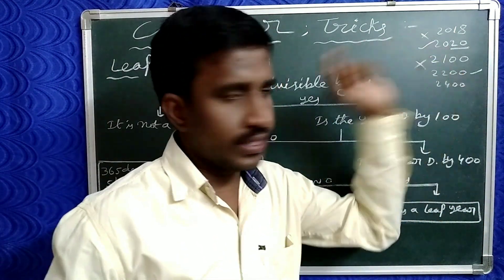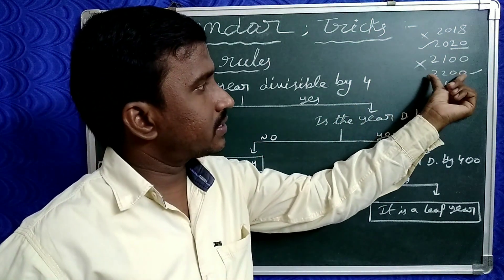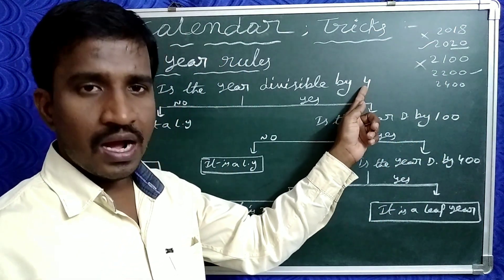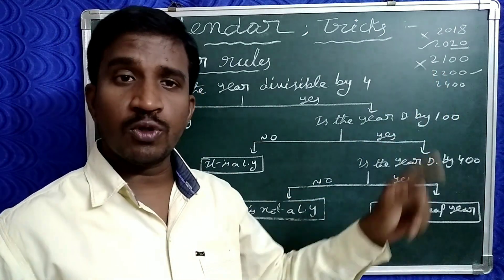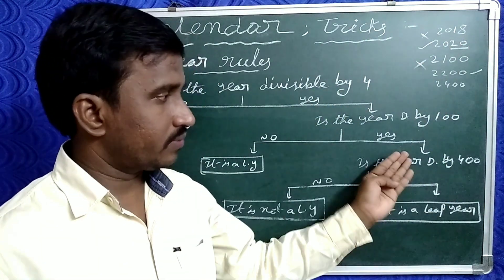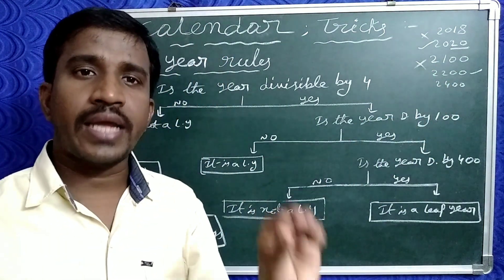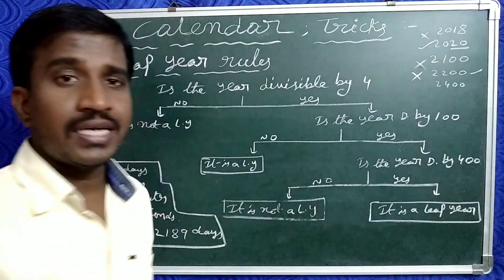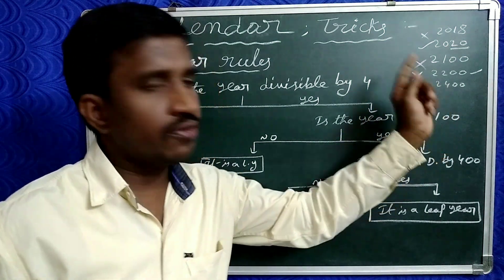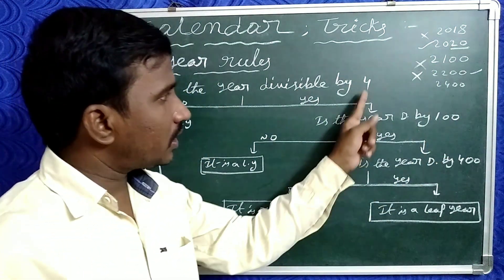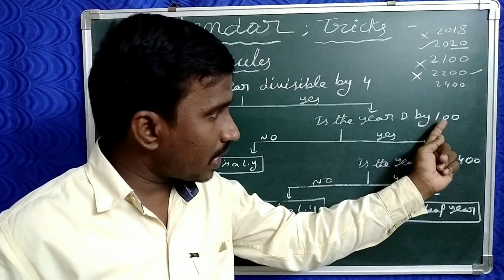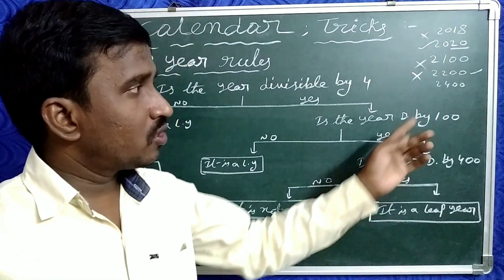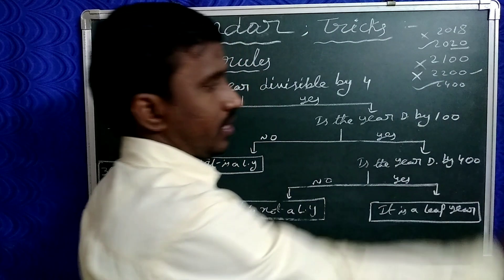Now take 2200. First, it is divisible by 4. Check 100 also — it is divisible by 100. Even so, check 400: 2200 is not exactly divisible by 400, so it is not a leap year. Now take 2400: 2400 is exactly divisible by 4, by 100, and also by 400. That is why 2400 is a leap year.